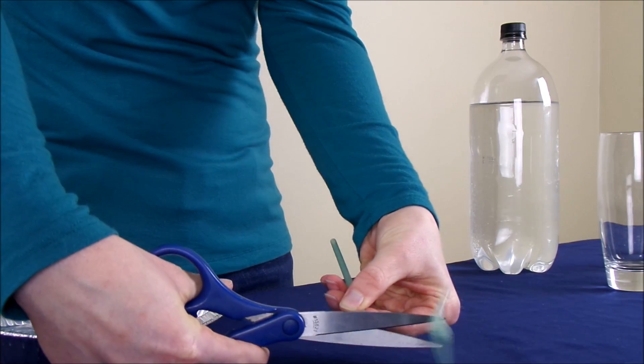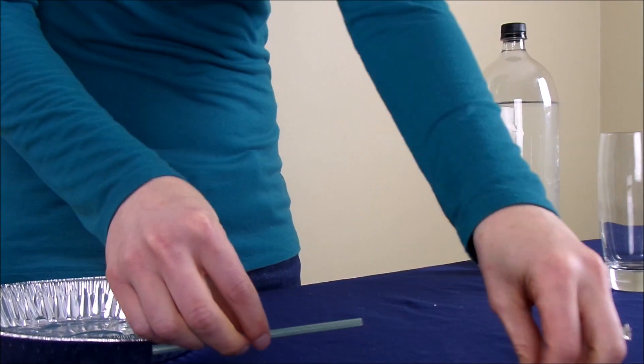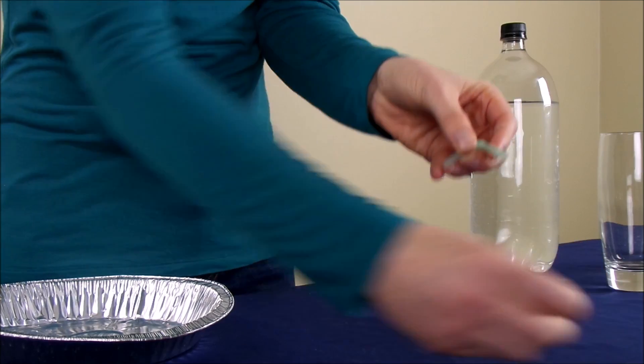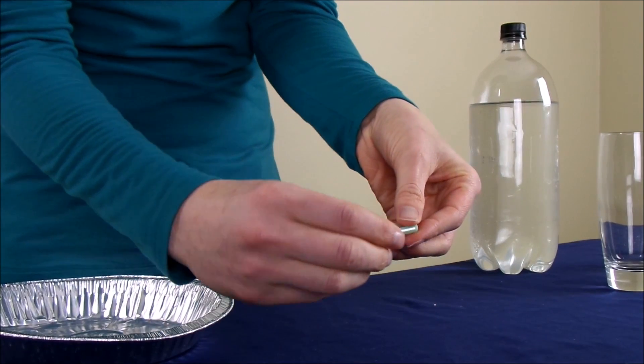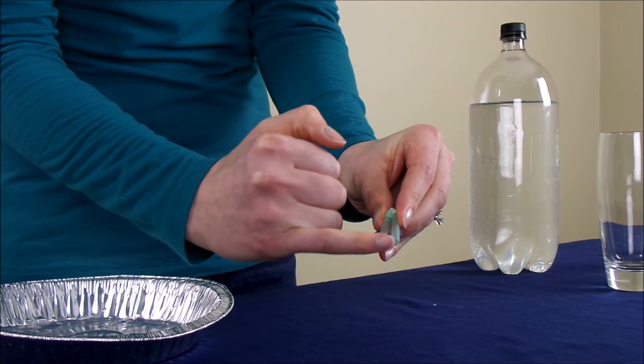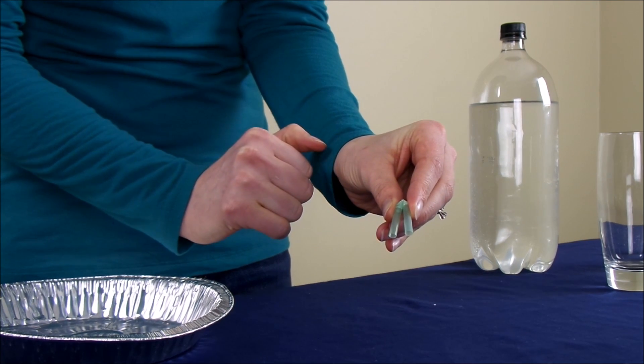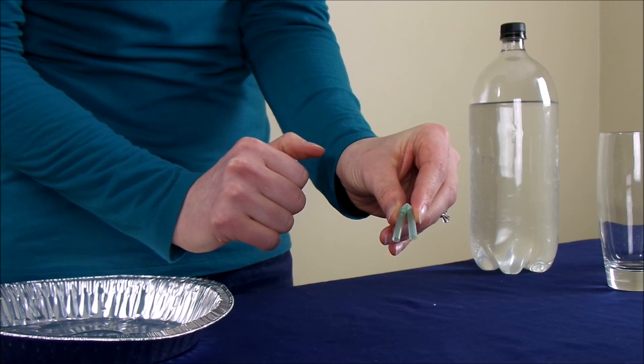You'll notice that I cut off both the long part as well as the short part here. It's really important to make sure that the scuba equipment is only about an inch down from the bend. Otherwise, it will be really hard to move the diver up and down in the bottle.